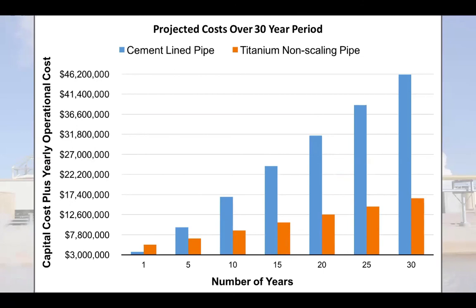Last but not least, we performed a cost analysis of the original material of construction — a cement-lined pipe — and a non-scaling pipe such as titanium-clad. For the titanium-clad, the installation cost is $4.97 million over the length of the pipe, while the cement-lined pipe costs $2.25 million. However, due to scaling, the cement-lined pipe requires the plant to shut down every 500 days to perform at maximum efficiency, resulting in a net lost revenue of $1 million every 500 days and an additional $200,000 for labor.